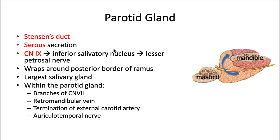This is what tells the parotid gland to produce saliva. As far as its location, the parotid gland wraps around the posterior border of the mandibular ramus. In an aerial cross-section view, we have the mastoid process, the mandibular ramus, the medial pterygoid muscle, and the masseter muscle, with the facial nerve running through here. The bulk of the gland is located lateral and superficial to the ramus and masseter, with only a small portion wrapping around the back. It extends from the mandibular border up to about the zygomatic arch, and it's the largest of the salivary glands.